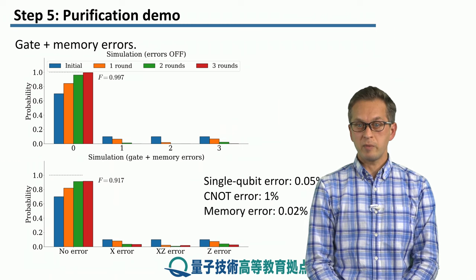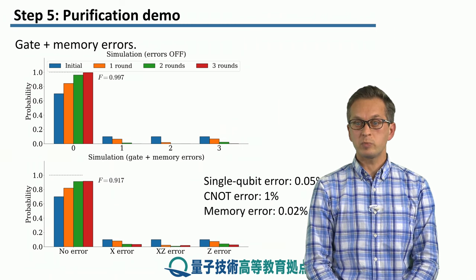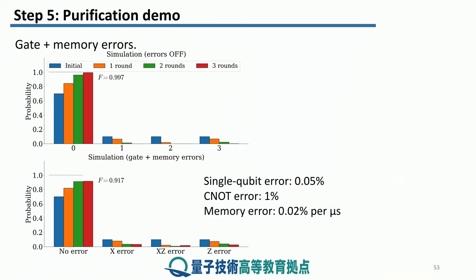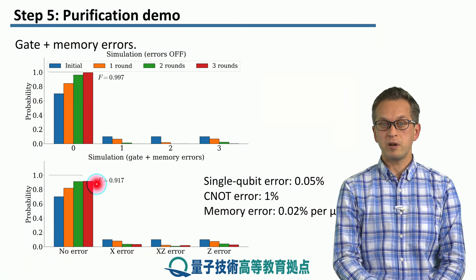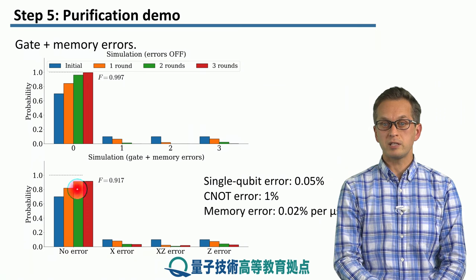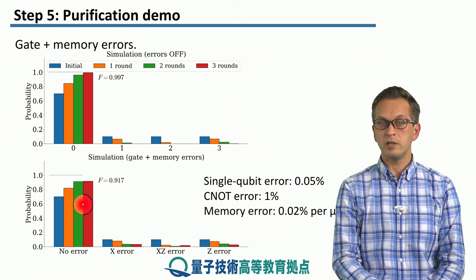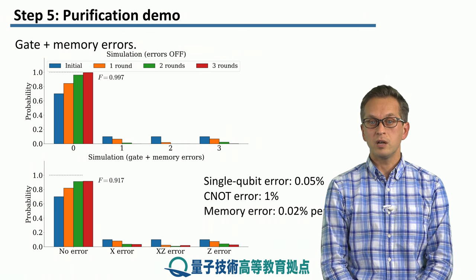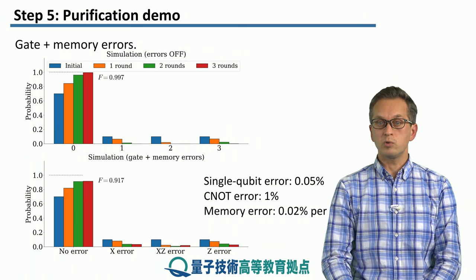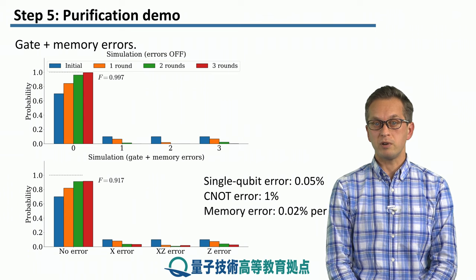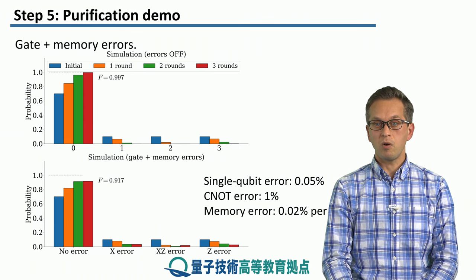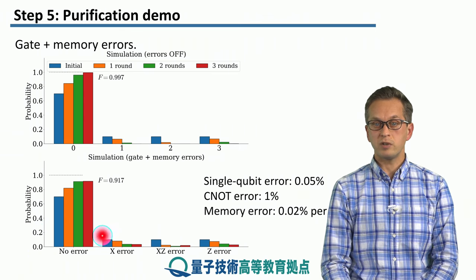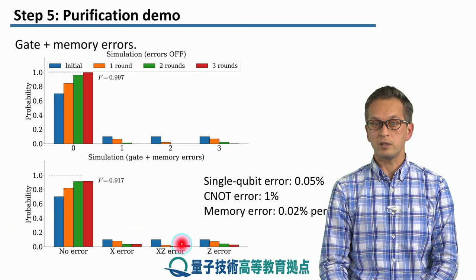We set the memory error to be 0.02% per microsecond. And these are the results. Now we can see that the final fidelity after three rounds has dropped quite substantially. In fact, there is no noticeable increase in fidelity going from two rounds all the way up to three rounds. And equally, all the probabilities of errors are increasing as well.